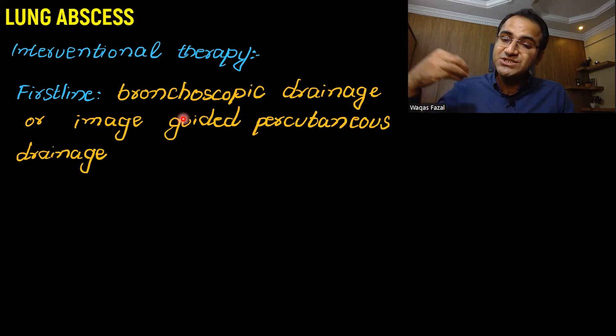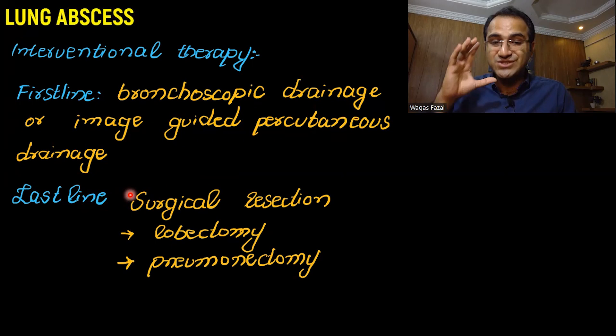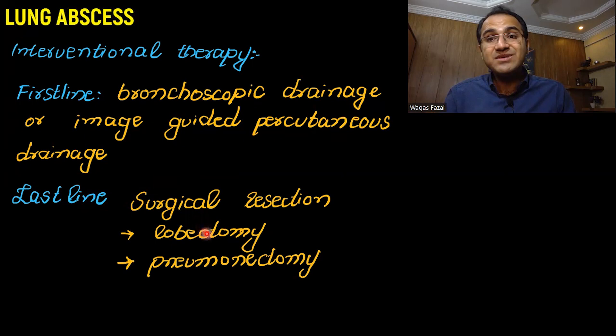The first line of interventional therapy is bronchoscopic drainage or image-guided percutaneous drainage of the abscess. If everything has failed and the lung abscess has spread and is huge, lobectomy is done — the lobe is removed. In some cases, the whole lung is taken out: pneumonectomy, removal of the whole lung.